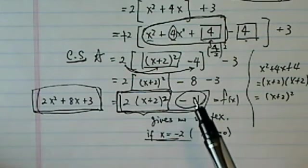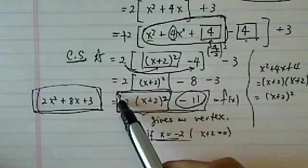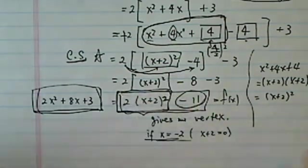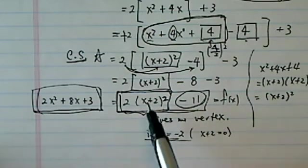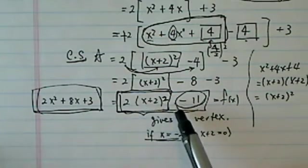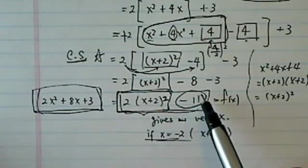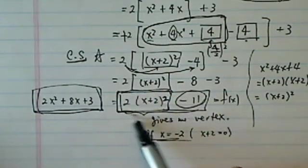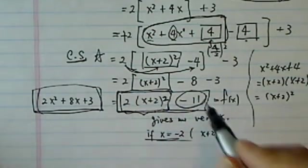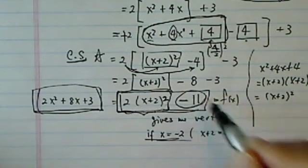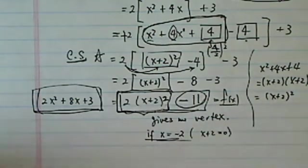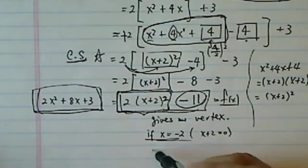And because this used to be a square term, the smallest of this chunk could ever get is 0. Anything else you put x in there is going to be bigger than 0, because it's a square term. So because when x equal to minus 2, this whole chunk becomes 0, the lowest value I could ever hope to get out of this function is minus 11. Thus, we have the vertex.